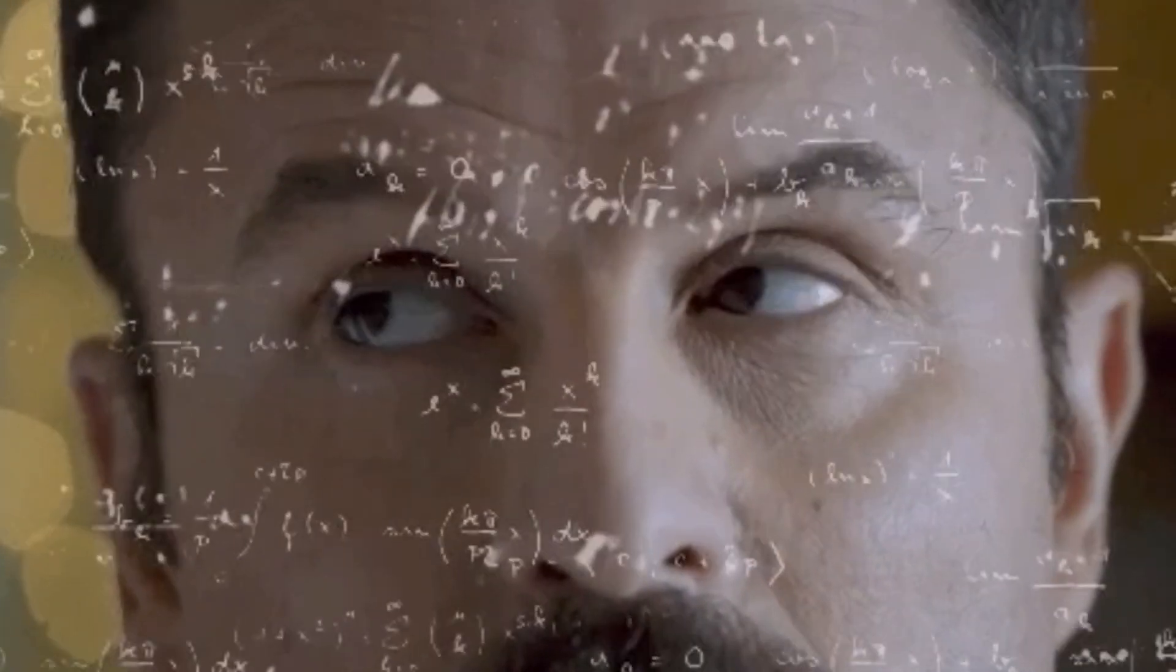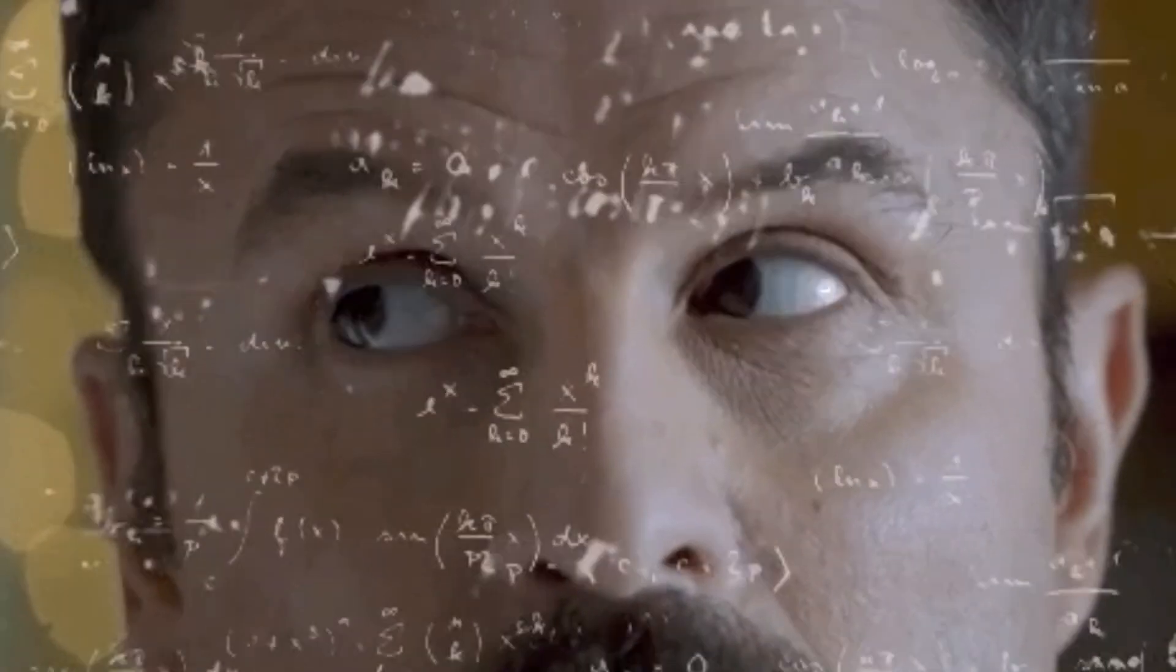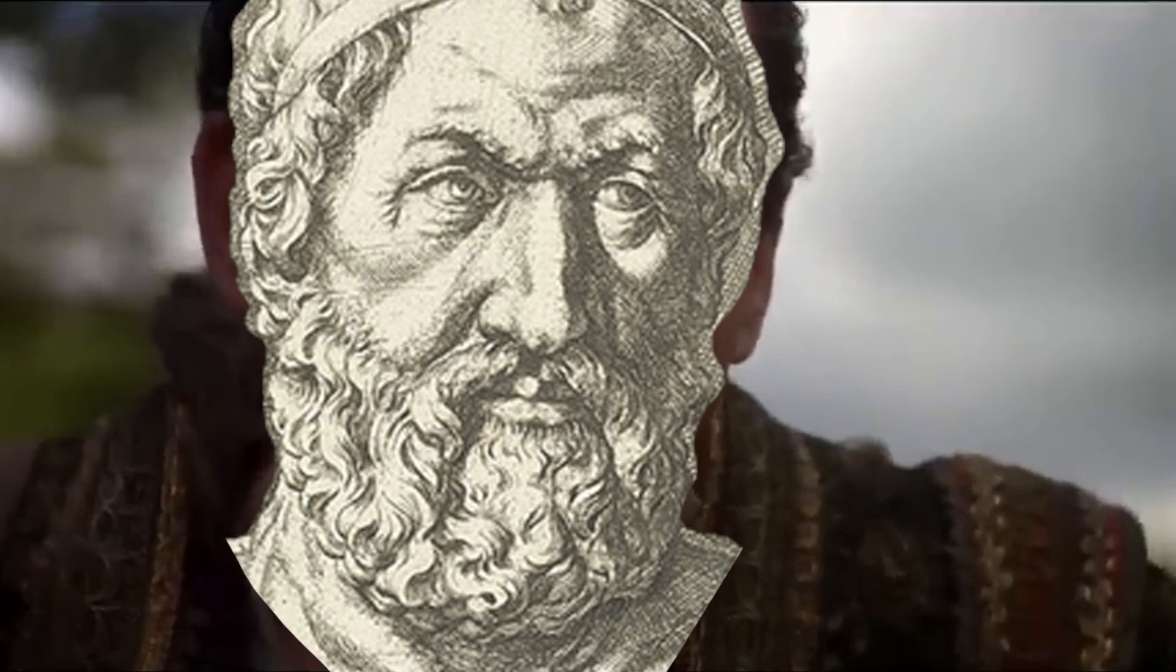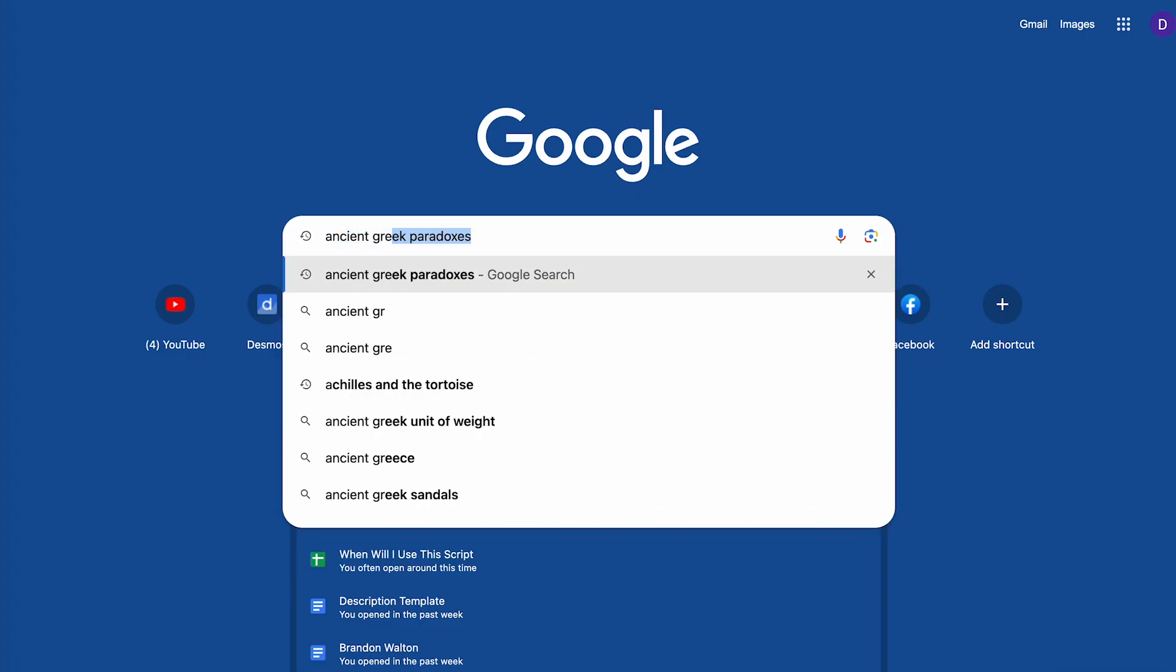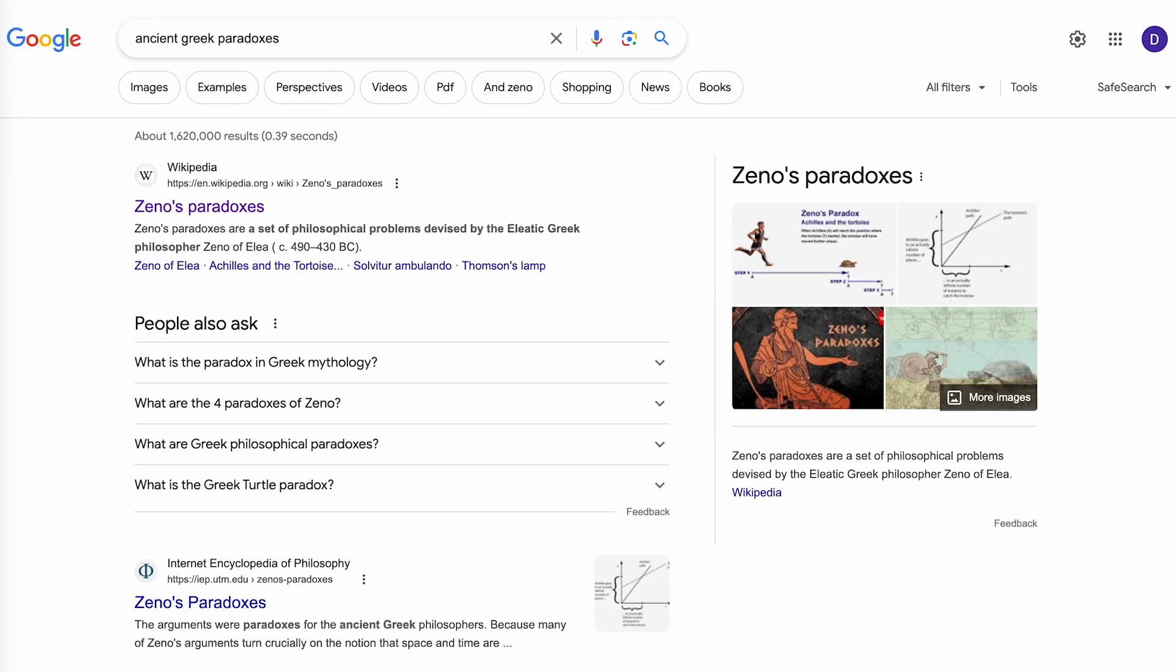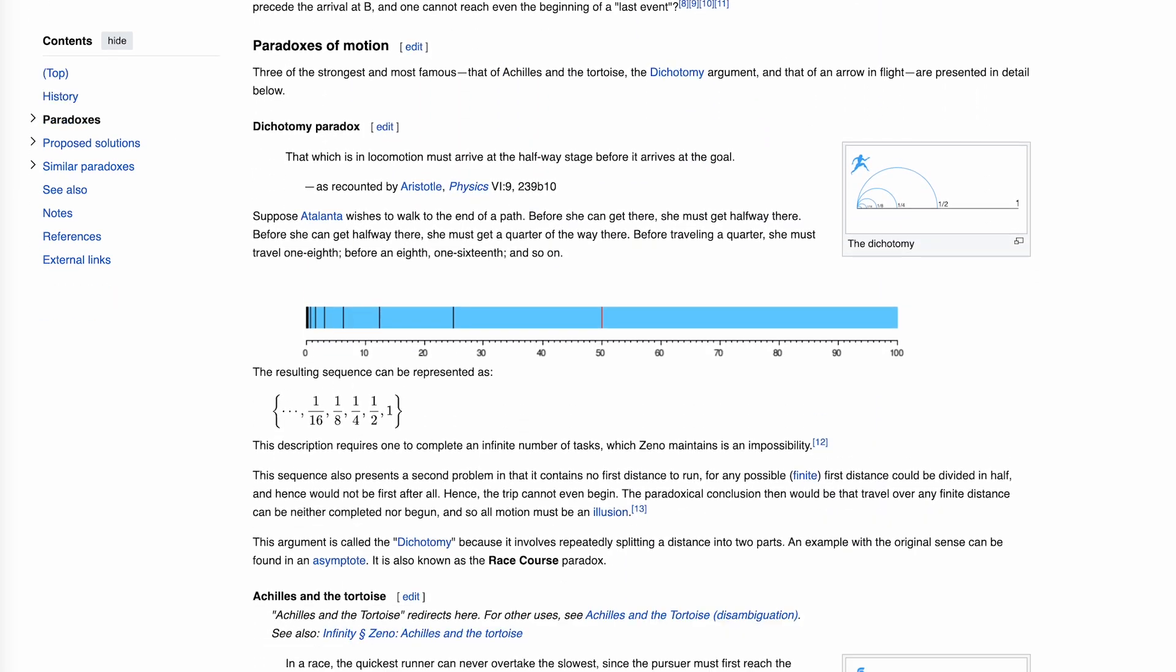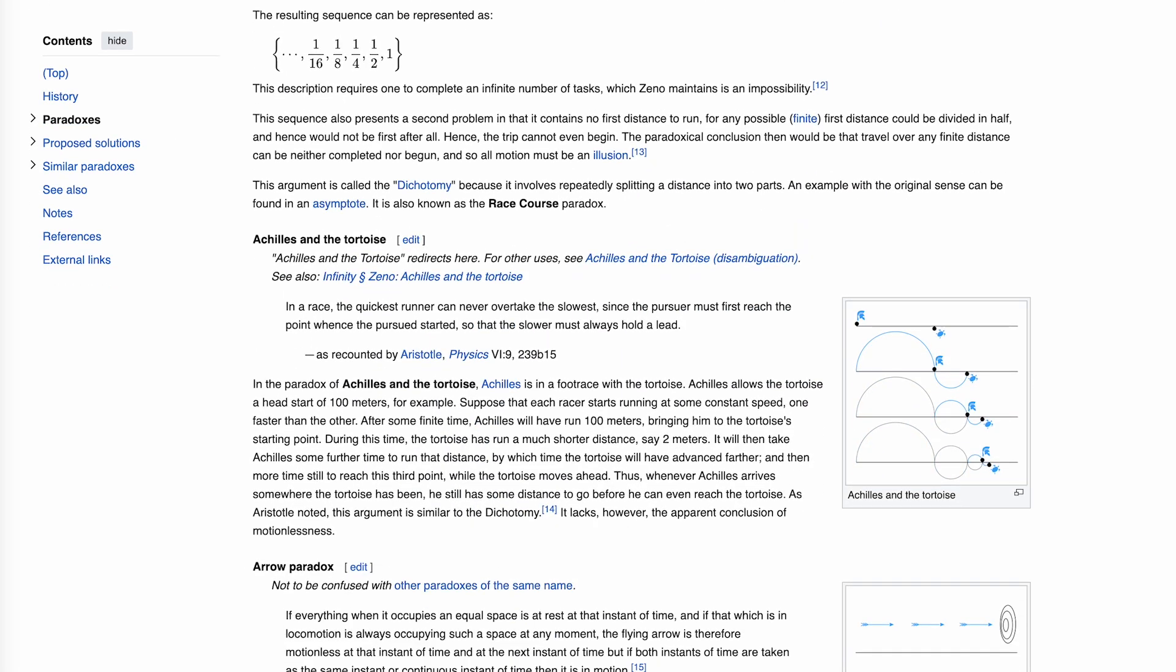The math of adding up infinitely many things to get a finite value can be mind-bending. It might seem impossible. It was for the ancient Greeks. They developed several paradoxes based on the math of adding up infinitely many things. The most famous are paradoxes developed by Zeno. Here's one of Zeno's paradoxes, called Achilles and the tortoise.